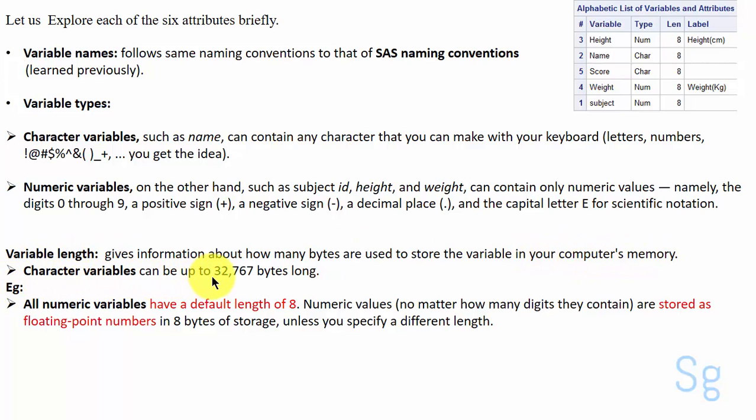Character variables can be up to 32,767 bytes long, whereas all numeric variables have a default length of 8. Numeric values, no matter how many digits they contain, are stored as floating point numbers in 8 bytes of storage unless you specify a different length. As you can see here, all our numeric variables by default have a length of 8.